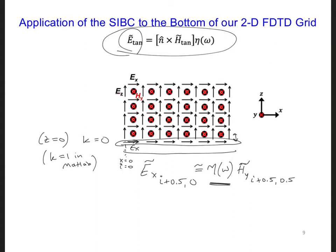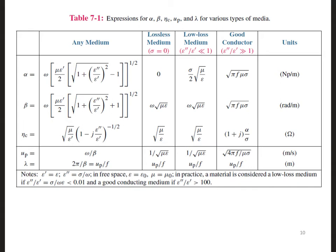So next, let's talk about this eta and what we should use for it. The loss tangent of the ground was 1200, and the ocean was 74,000. So both are good conductors. So in table 7-1, the impedance of a good conductor is 1 plus j times alpha over sigma. So if we use the expression for alpha for a good conductor, we can plug that in. So we're going to have eta as a function of omega is 1 plus j times, I'm going to plug in for alpha, pi f mu sigma, and put that over sigma.